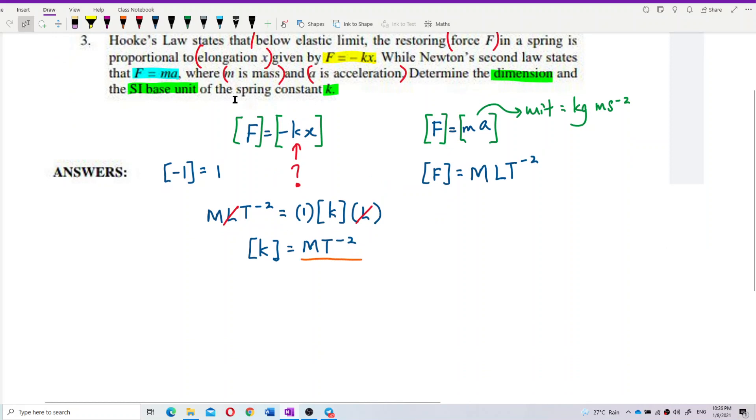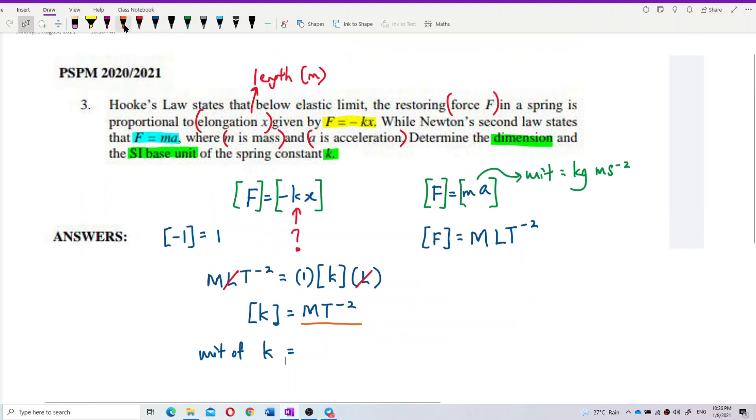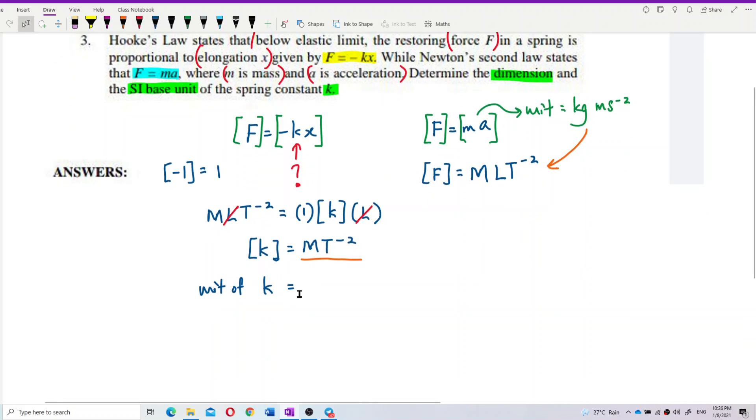This is the dimension of k. So now I want to find the SI base unit of k. I'm going to find the unit of k. So just write unit of the spring constant k will be equal to, just translate to unit. Just like last time we translate from unit go to dimension. This time from dimension, we also can translate to unit. Same thing. So, the M is a mass, mass is kilogram. And then T is time. Time has a unit second. That's the unit for k. Dimension of k, unit of k.